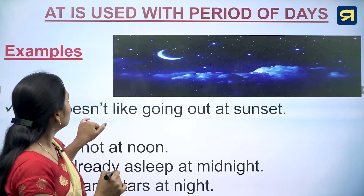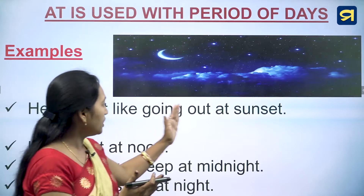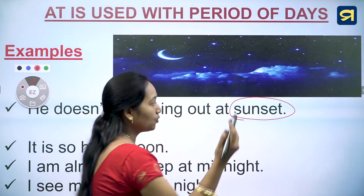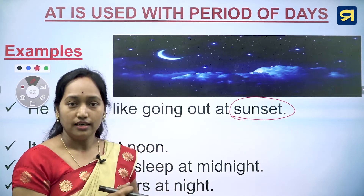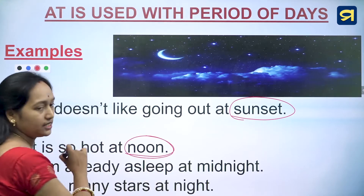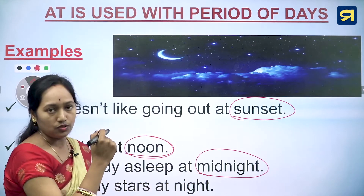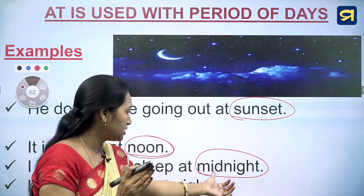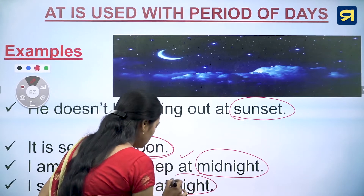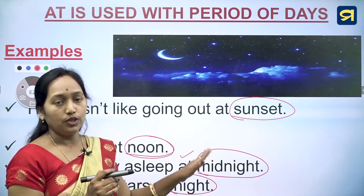'At' is also used with periods of the day. For example: he doesn't like going out at sunset, at dawn, it is so hot at noon, I am already asleep at midnight, and I see many stars at night. In all these cases we are discussing a specific period of the day, so we use 'at'.